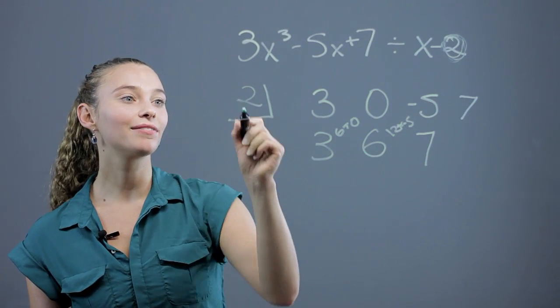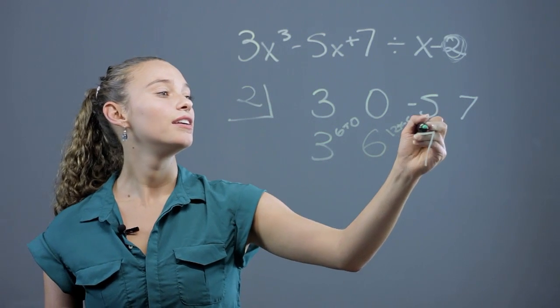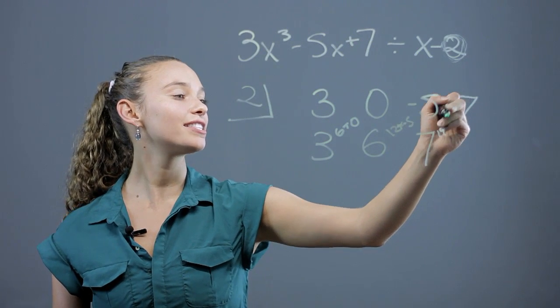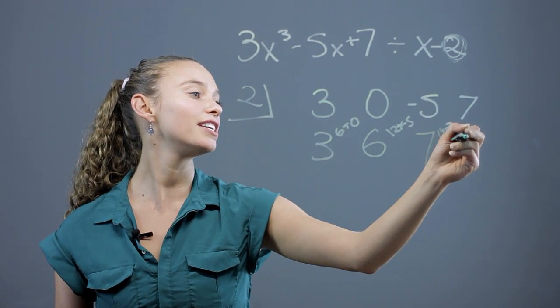Then, we just do it again. 2 times 7 is 14. And then we add it to this number. 14 plus 7 is going to be 21.